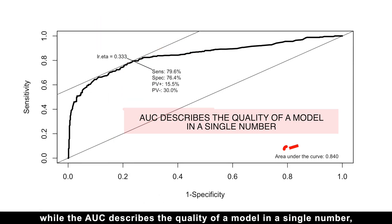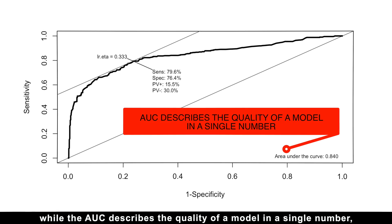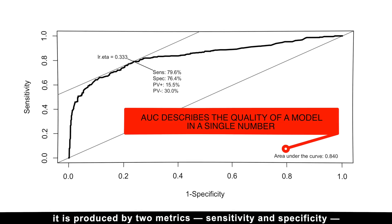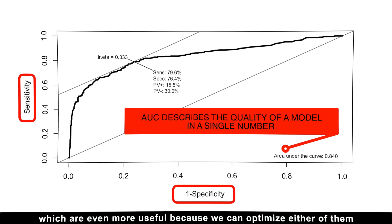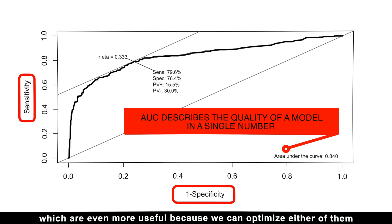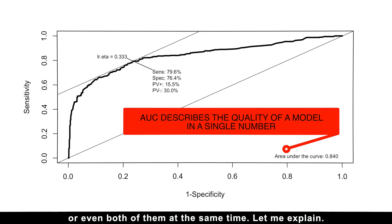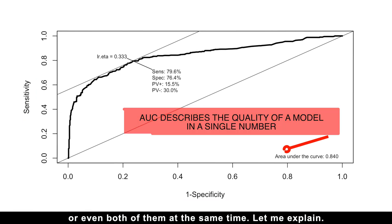Interestingly, while the AUC describes the quality of a model in a single number, it is produced by two metrics: sensitivity and specificity, which are even more useful because we can optimize either of them or even both of them at the same time. Let me explain.